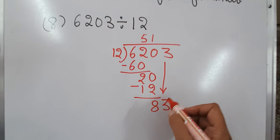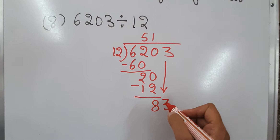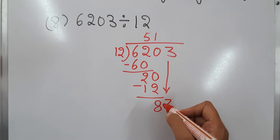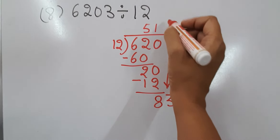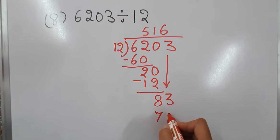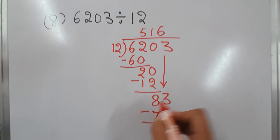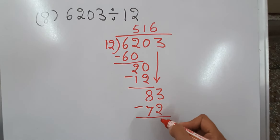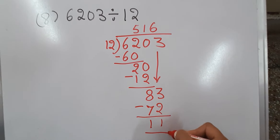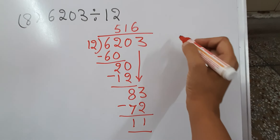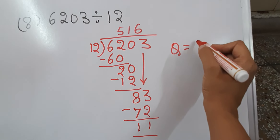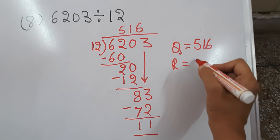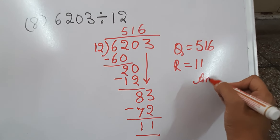So now we have 83. 12×6 is 72, which is just smaller than 83. We put 6 here and subtract. We get 11. So the quotient is 516 and the remainder is 11. That is our answer.